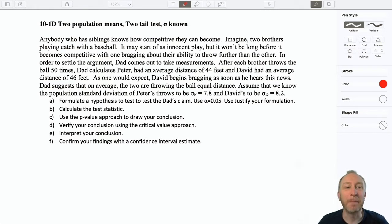Anybody who has siblings knows how competitive they can become. Imagine two brothers playing catch with a baseball. It starts off as innocent play, but it won't be long before it becomes competitive with one bragging about their ability to throw further than the other. In order to settle the argument, Dad comes out to take measurements. After each brother throws the ball 50 times, Dad calculates Peter had an average distance of 44 feet, David had an average distance of 46 feet. As one would expect, David begins bragging right away. Dad suggests that on average, the two are throwing the ball equal distance. Assume that we know the population standard deviation of Peter's throws is 7.8, David's throws 8.2.